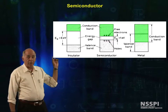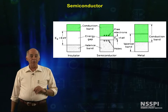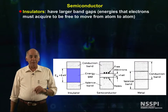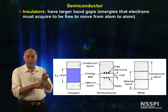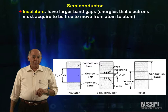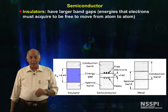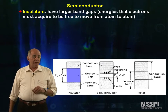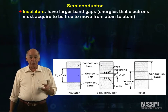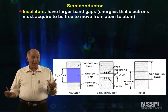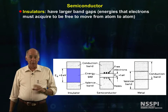The conduction band represents a state within the material where the electrons can move freely from atom to atom. At room temperature, if the valence band is separated from the conduction band by more than about 5 electron volts, thermal agitation caused by thermal energies cannot promote these electrons up to the conduction band. These materials are insulators — they neither conduct electricity nor heat very well. Examples are glass, ceramics, and wood.